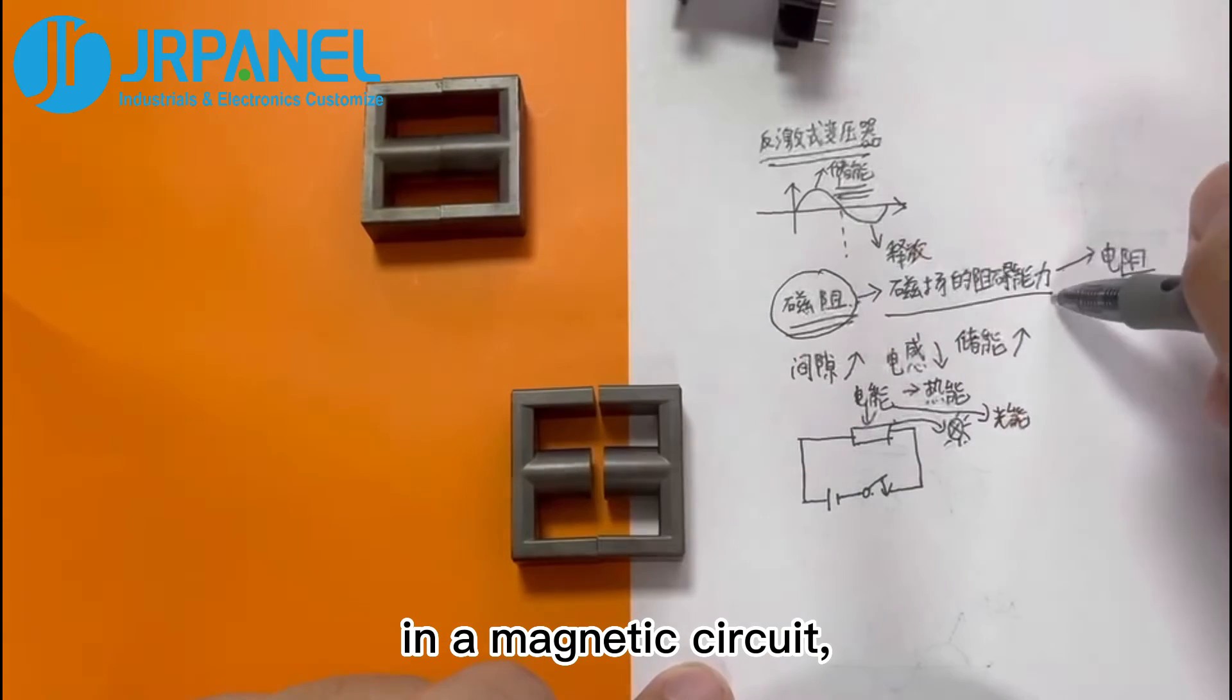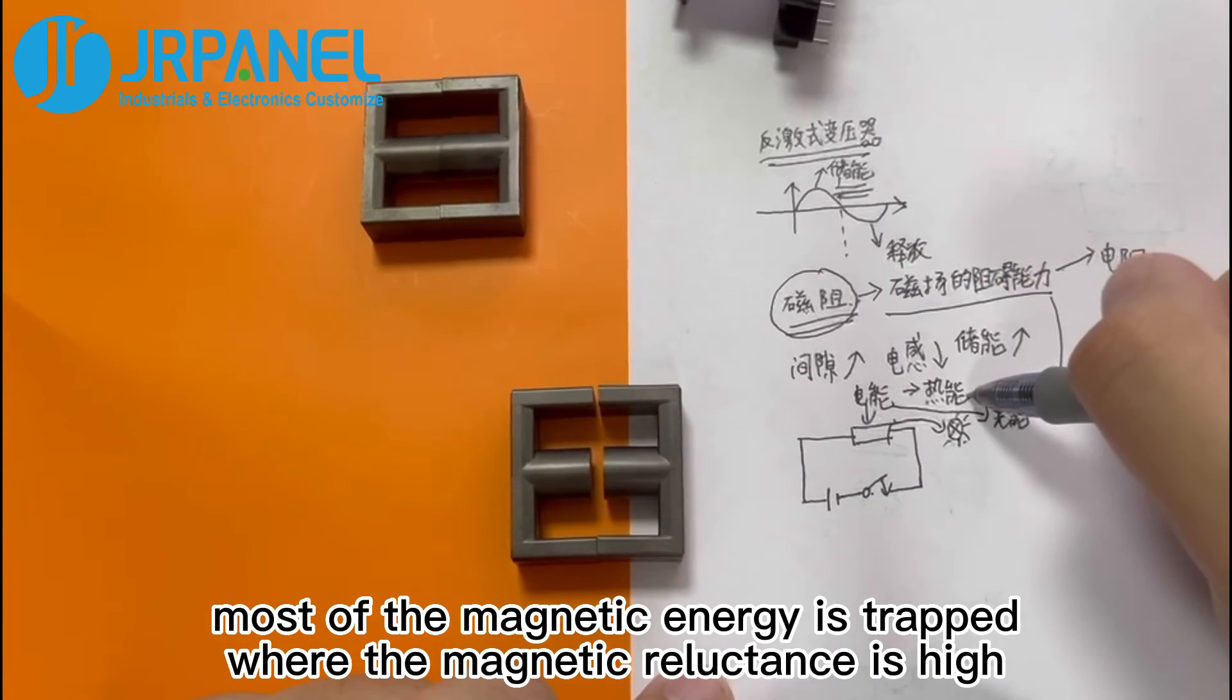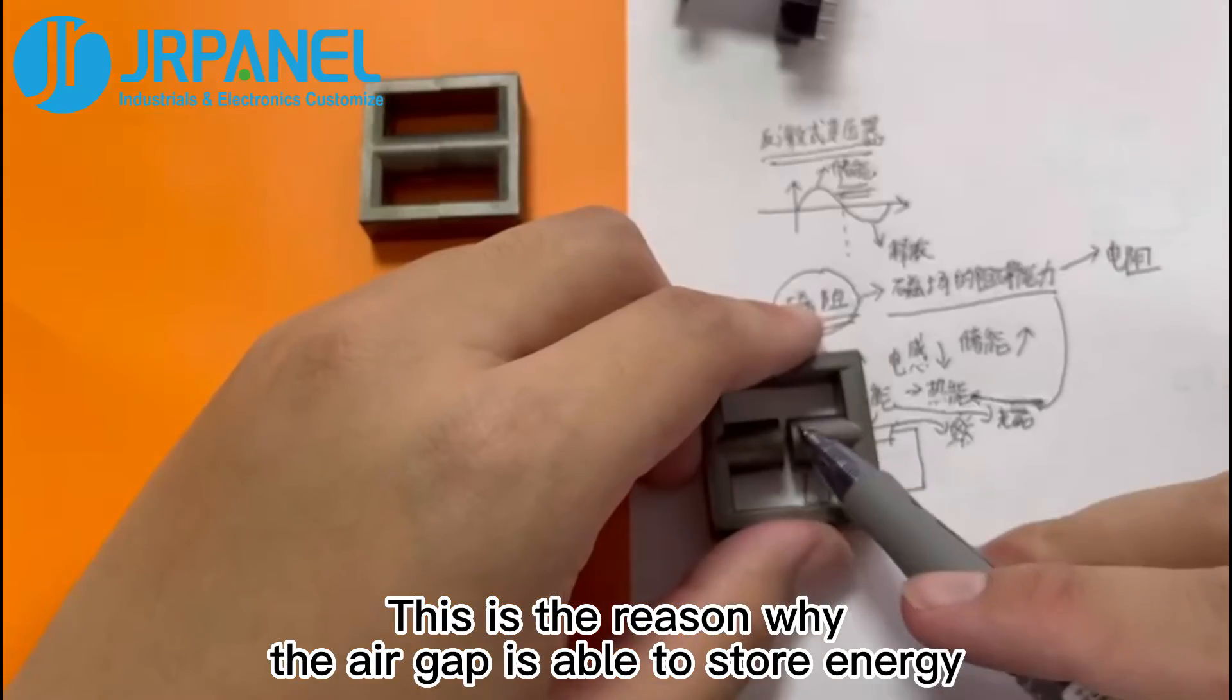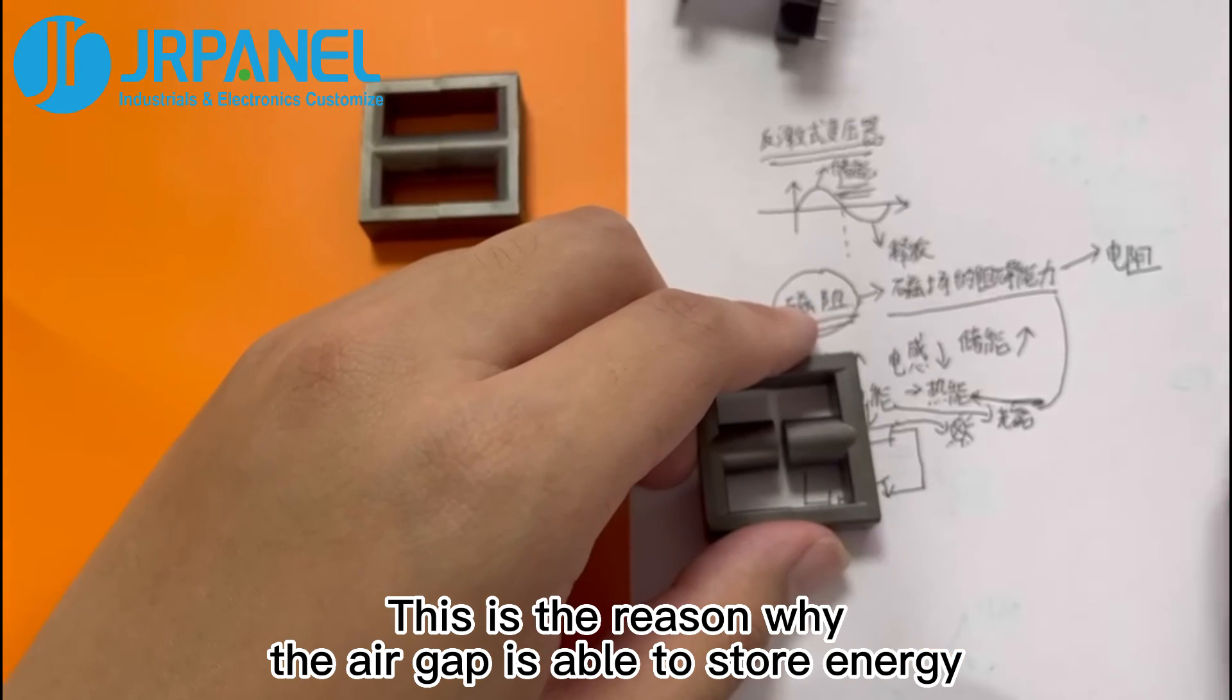Like a circuit, in a magnetic circuit, most of the magnetic energy is trapped where the magnetic reluctance is high. This is the reason why the air gap is able to store energy.